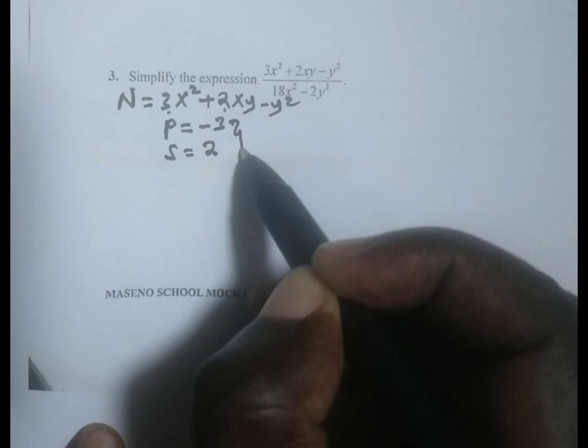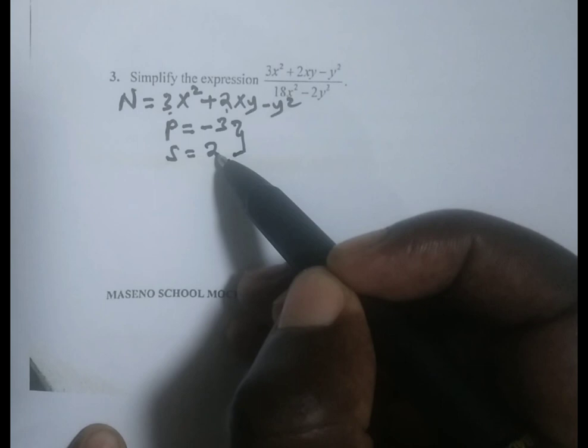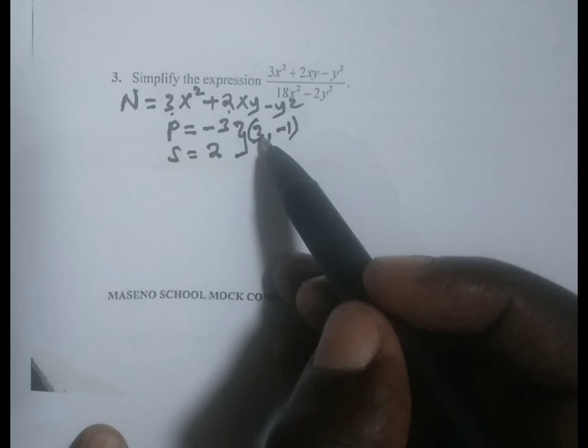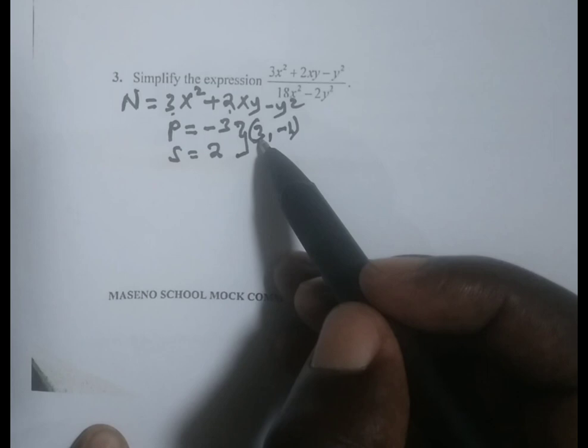We need two factors whose product is negative 3 and their sum is positive 2. If you take negative 1 times 3, you get negative 3. Then negative 1 plus 3, you get a sum equal to 2.